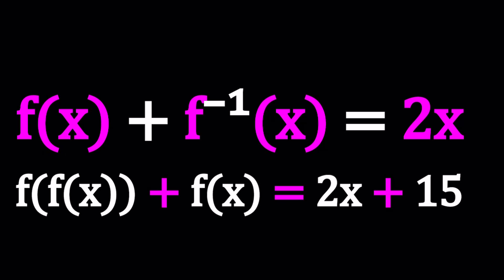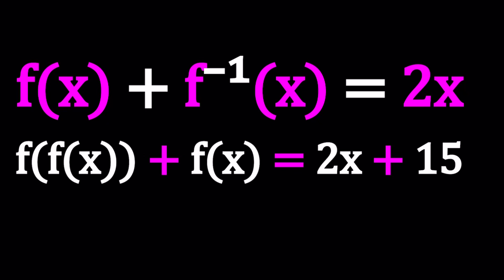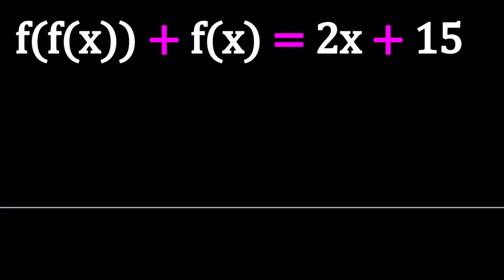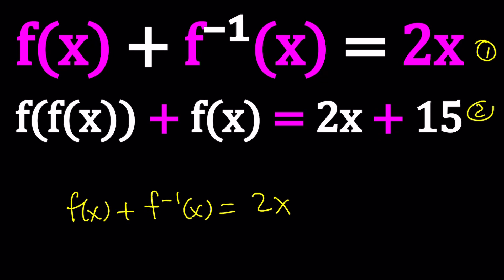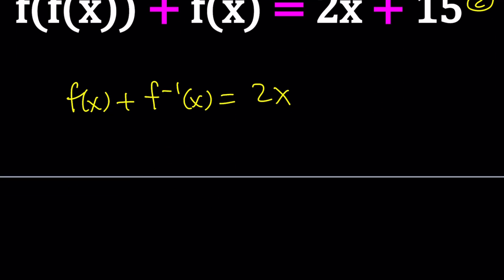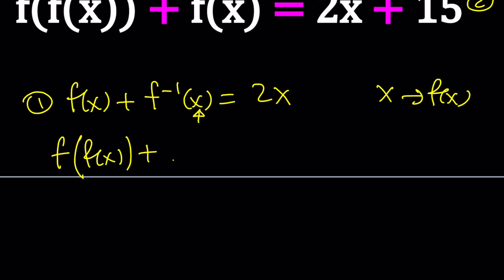We're going to talk about some general ideas and then some specifics. In the first equation, I'm going to copy it one more time because I'm going to substitute something. I consider the top one to be the first equation and the bottom one to be the second. In the first equation, I'm going to replace x with f(x). When I do it, I'm going to get f⁻¹ composed with f, which is the identity function, giving us x. So replace x with f(x): you get f(f(x)) + f⁻¹(f(x)) = 2·f(x).